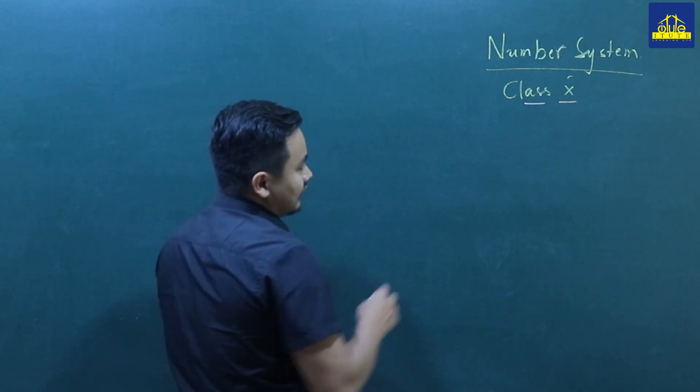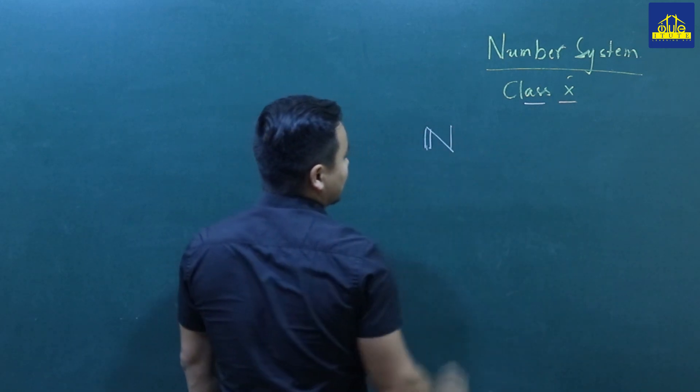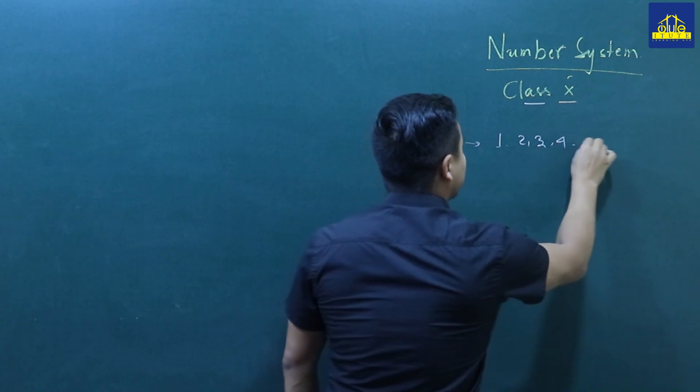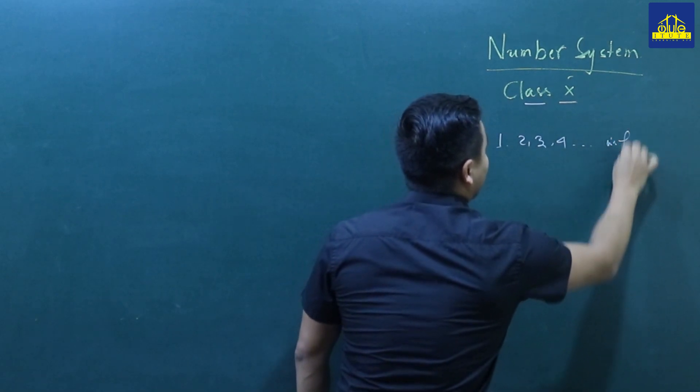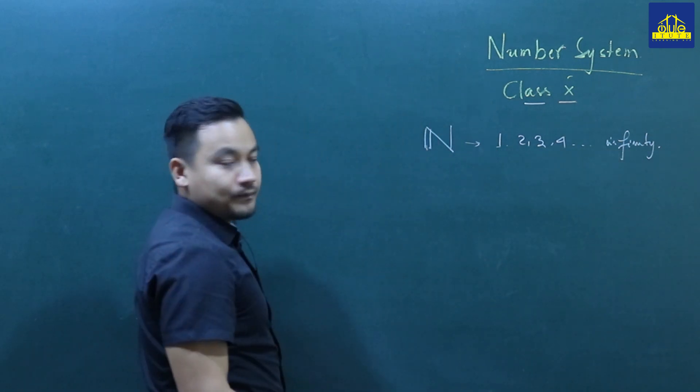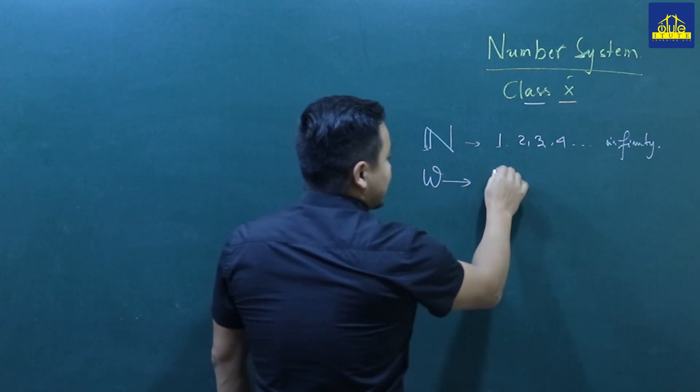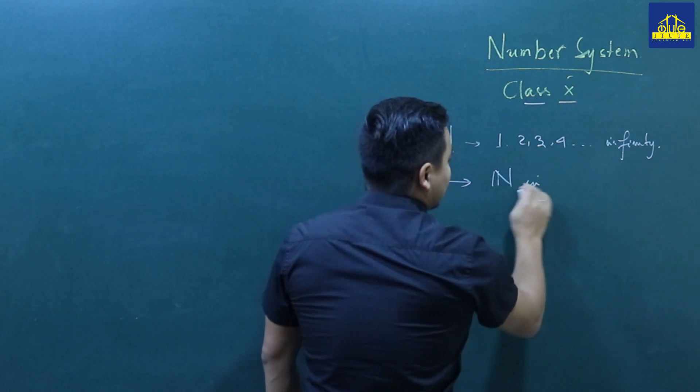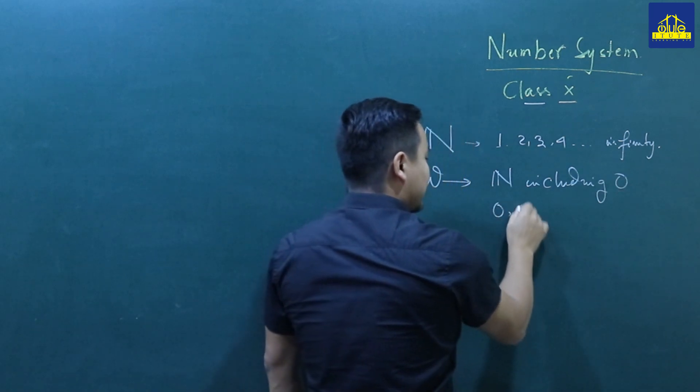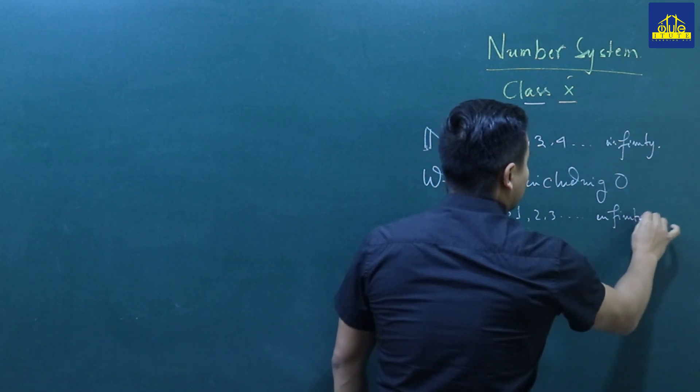In the number system, we have natural numbers, which are the counting numbers starting from 1, 2, 3, up to infinity. Then we have whole numbers, which are the natural numbers including zero - that is 0, 1, 2, 3, up to infinity.